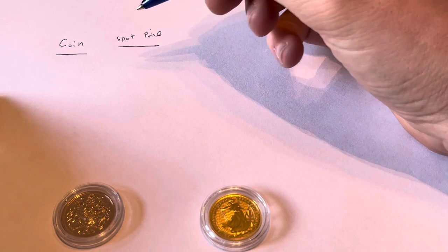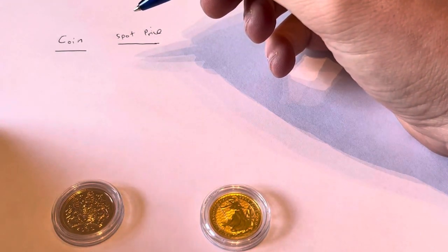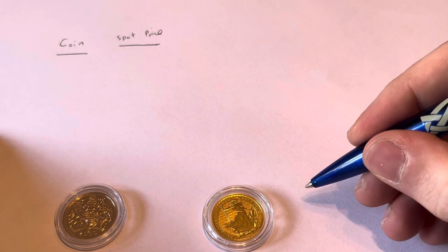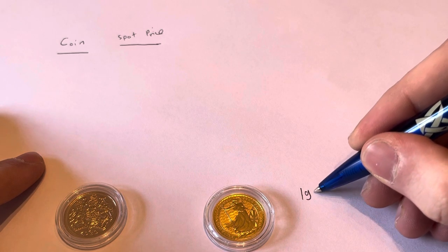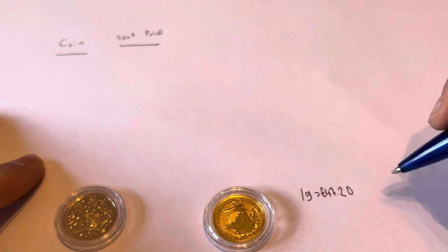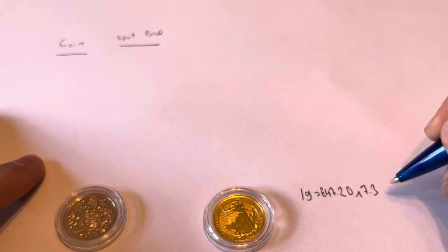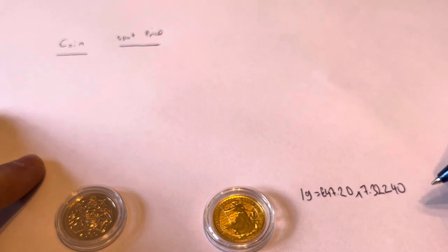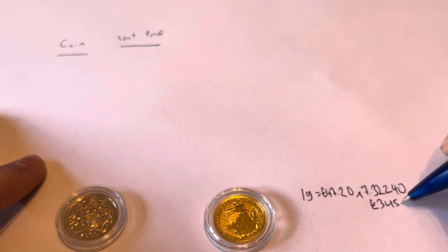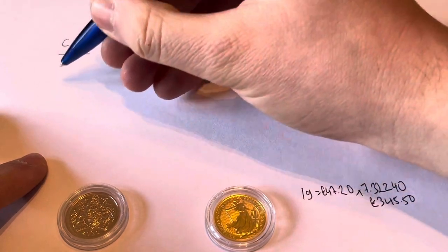On spot price, we're obviously not going to be using the normal ounce spot price, because obviously these coins aren't a full ounce. So in the case of the sovereign, it's going to be 7.32240 grams. So today, I'll just put a note down here, today which is the 2nd of April 2022, a gram of gold spot price is £47.20. So in order to get the intrinsic spot price within the sovereign, I'm going to times that by the amount of grams of gold within the sovereign, which is 7.32240. So that leaves us with a spot price there on the sovereign of £345.50.